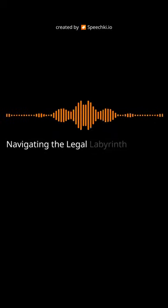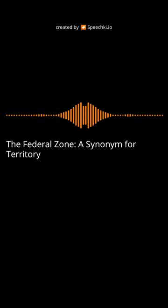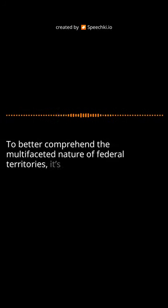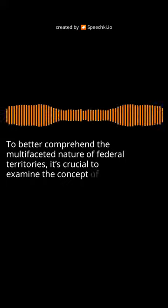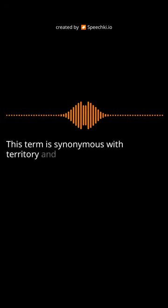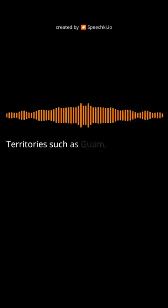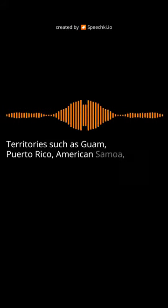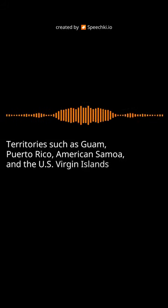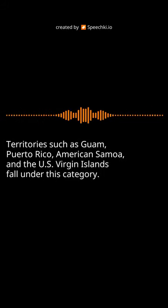Navigating the legal labyrinth: the federal zone, a synonym for territory. To better comprehend the multifaceted nature of federal territories, it's crucial to examine the concept of the federal zone. This term is synonymous with territory and refers to areas under the jurisdiction of Congress. Territories such as Guam, Puerto Rico, American Samoa, and the U.S. Virgin Islands fall under this category.